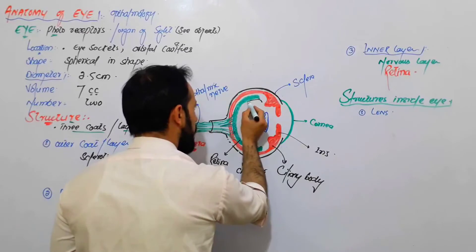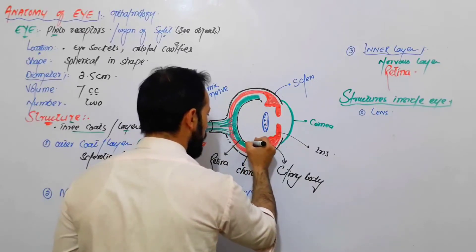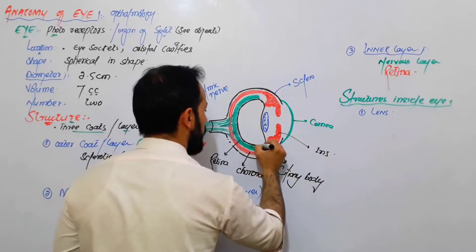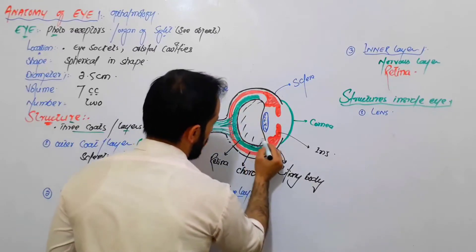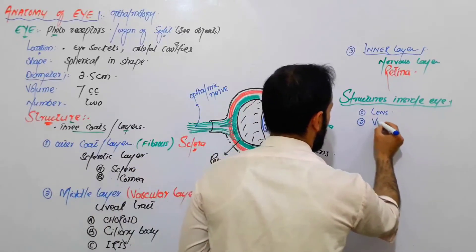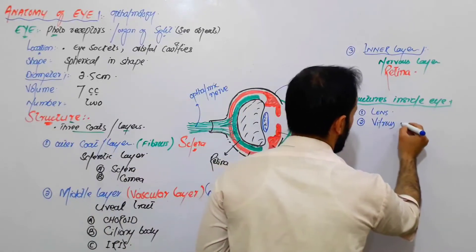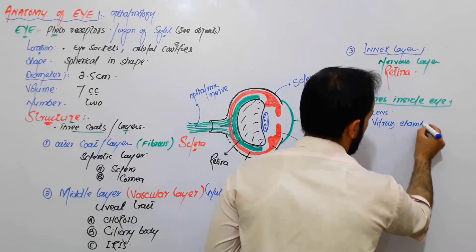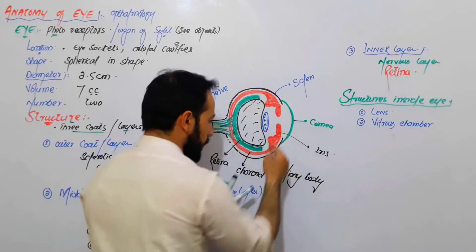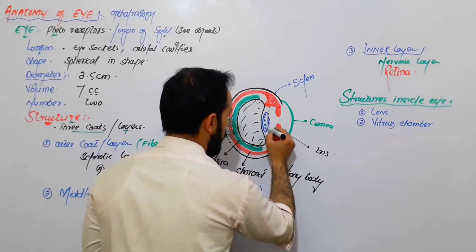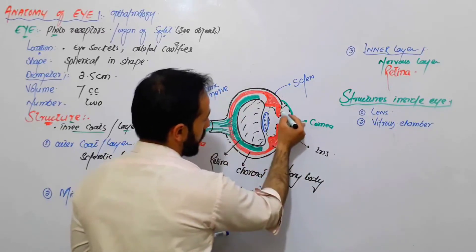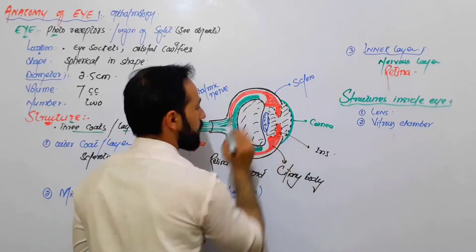Here is a cavity and this cavity is filled with fluid. This fluid is called the vitreous fluid, and this space is called the vitreous chamber. Then, in front of the lens and behind the cornea, there is another chamber called the aqueous chamber.